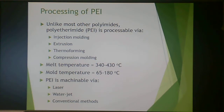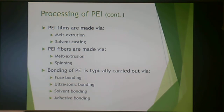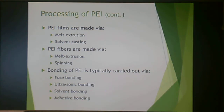Unlike polyimides, polyetherimide is processable. Polyetherimide has lower Tg values and therefore can actually melt and flow, which is necessary for injection molding, extrusion, thermoforming, or compression molding. The melt temperature can be up to 430°C — really high — and your mold temperature often has to be kept high as well. It is machinable by laser, water jet, and conventional methods. Film can be made by melt extrusion or solvent casting, and polyetherimide fiber can be made by melt extrusion or spinning. Bonding can be done by fuse bonding, ultrasonic bonding, solvent bonding, or adhesive bonding. They do in fact solvent bond PEI for aerospace applications.